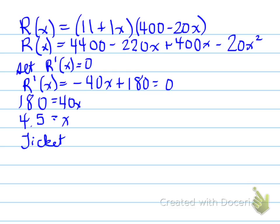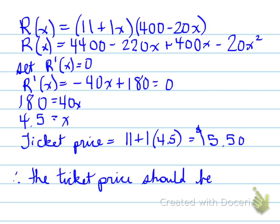Now, can this number actually be 4.5? Well, when you think about it, I could have 4.5 increases. So that's $4.50 here. And can I lose 4.5 twenties? Well, of course, 4.5 twenties means that you're going to lose 90 people. So the ticket price is going to be 11 plus 1 times 4.5 is equal to $15.50, and that will be your ticket price. So therefore, the ticket price should be $15.50 to maximize revenue.